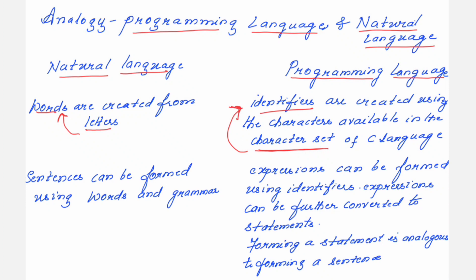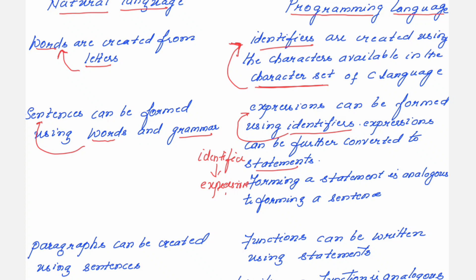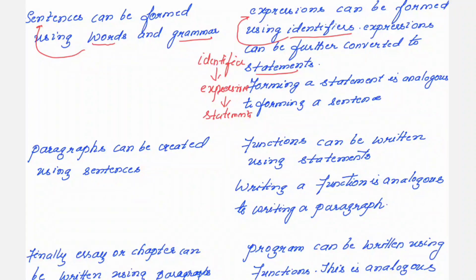In natural language, once you are familiar with words and a bit of grammar, you start forming sentences. Similarly in programming language, you use identifiers to form expressions. Using identifiers you are forming expressions, and further these expressions are converted into statements. This is the way you form statements of the C programming language.